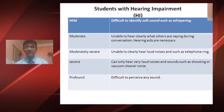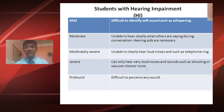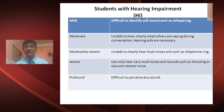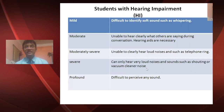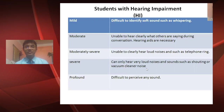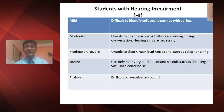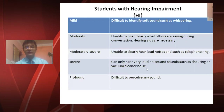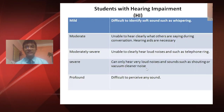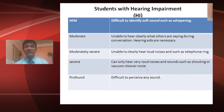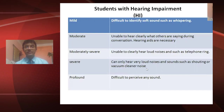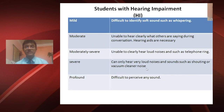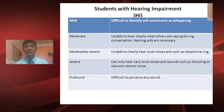Students with moderate hearing impairment are unable to hear clearly what others are saying during conversation, and hearing aids are necessary. Students with moderately severe hearing impairment are unable to clearly hear loud noises such as a telephone ring.